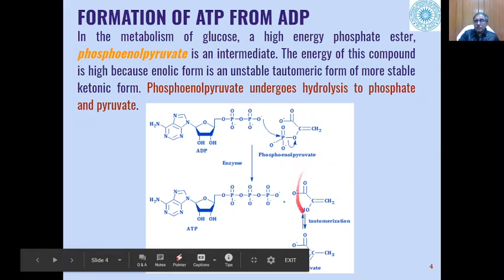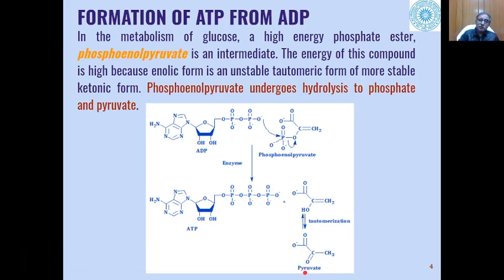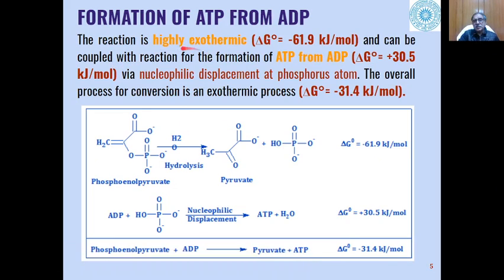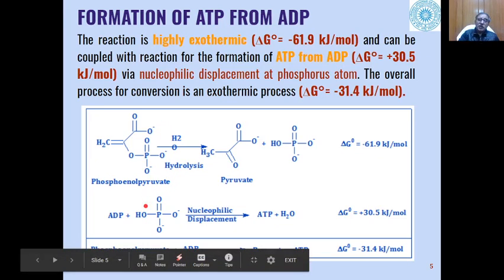The kinetics of this reaction show that it is highly exothermic — delta G° is minus 61.9 kilojoules per mole. This reaction can be coupled with the formation of ATP from ADP. Basically, this is a two-step reaction describing how ADP is converted into ATP.